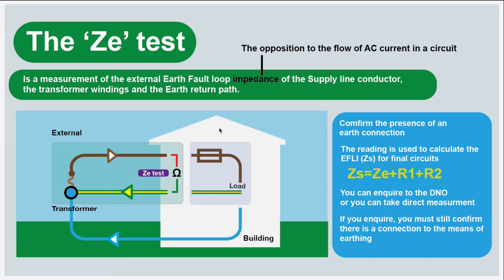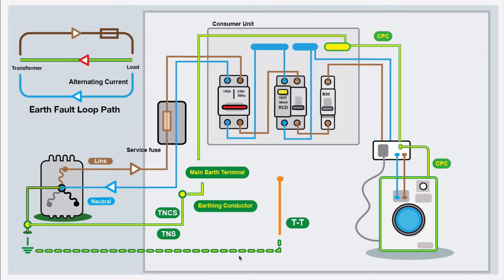Here we have a more detailed picture of this setup. We've got the external part we're testing — the transformer in the street that sends power into the building through your service fuse, through your main switch, into any protective devices, onto the appliances, and returns on the neutral back to your transformer in the street. This is alternating current. We're just doing a simple return path and testing this ZE.